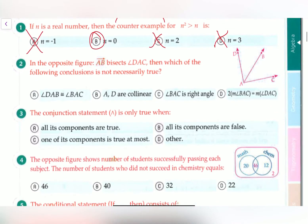Now, let's move on to question number 2. In the opposite figure, AB bisects angle DAC, then which of the following conclusions is not necessarily true? So it's saying that AB bisects DAC. And what does bisect mean? Bisect means it divides it into 2 parts. So it's saying that AB divides DAC, the angle DAC, into 2 parts.